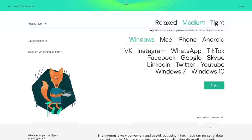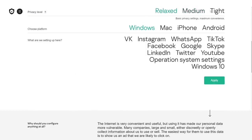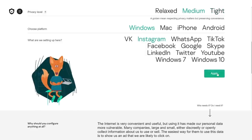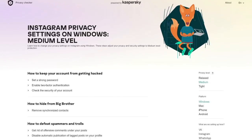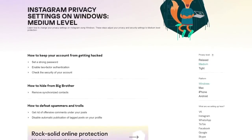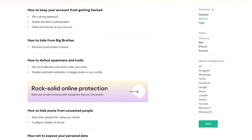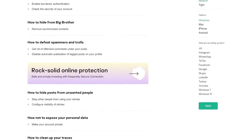And that's why you need Kaspersky Privacy Checker. Here is how it works. Choose the level of privacy you are comfortable with, a platform, and the website or an app you are interested in. The privacy checker will give you all the needed instructions to keep your account from getting hacked, how to keep Instagram from monitoring you, how to defeat spammers and trolls, and most importantly, how to clean up other traces of your presence.